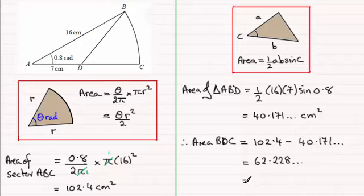So rounding this to three significant figures, it's going to be 62.2 centimetre squared to three significant figures, or 3SF for short.